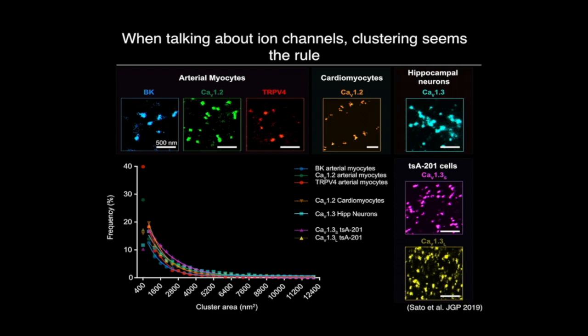The fact that we saw clustering in almost any channel we tested brought the idea that probably clustering is just a simple organization that ion channels adapt to in the lipid environment of the plasma membrane. Recently, we developed a mathematical model to see how the organization of channels changes when you randomly insert and remove channels into the plasma membrane.